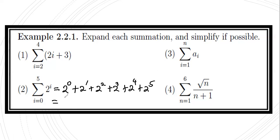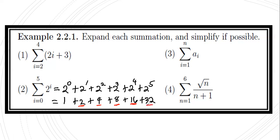Simplifying: 2^0 = 1, 2^1 = 2, 2^2 = 4, 2^3 = 8, 2^4 = 16, 2^5 = 32. Adding them: 2 + 8 = 10, 4 + 16 = 20, 20 + 10 = 30, 30 + 32 = 62, 62 + 1 = 63. So the summation of 2^i where i ranges from 0 to 5 is equal to 63.